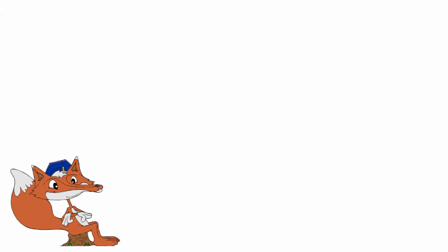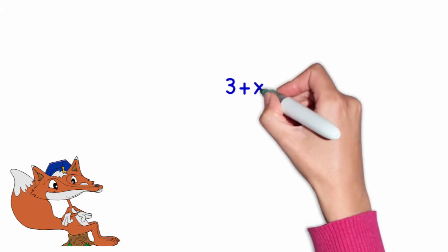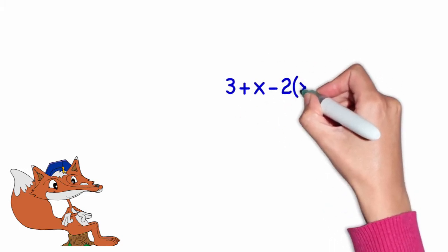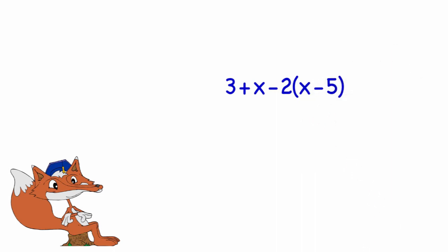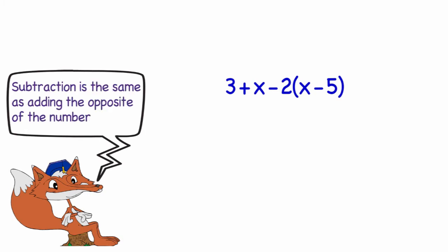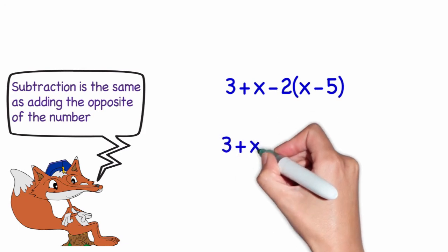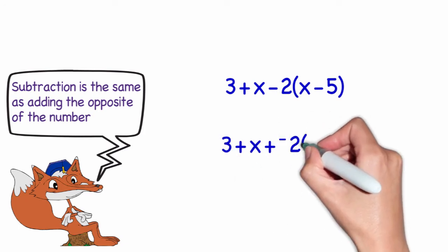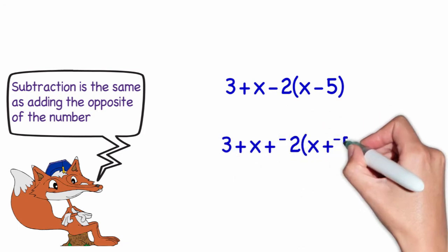Let's look at one more example: 3 plus x minus 2 times quantity x minus 5. At this point, it's really useful to remember that subtraction is the same thing as adding the opposite. So we could change this to 3 plus x plus negative 2 times the quantity x plus negative 5.